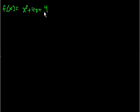So the first problem says: identify the critical points and find the maximum and minimum value on the given interval. They say f of x is equal to x squared plus 4x plus 4, and the interval they care about is from minus 4, including minus 4, to 0.